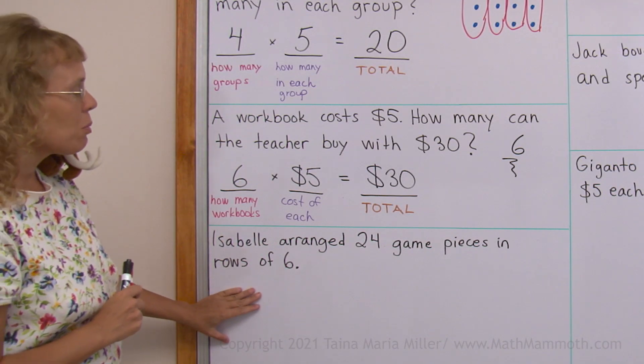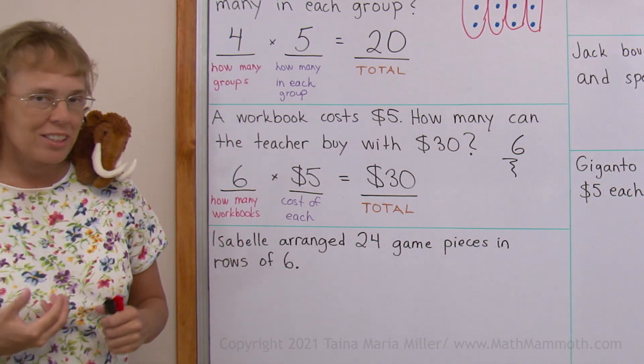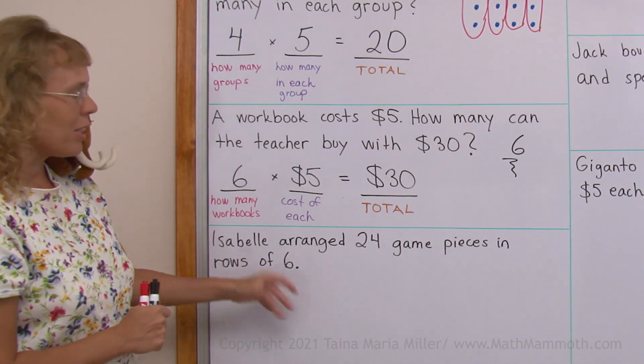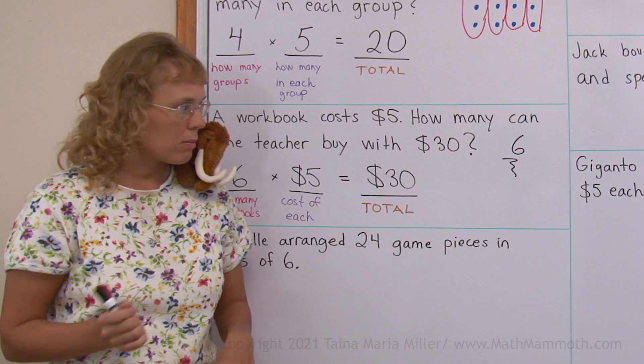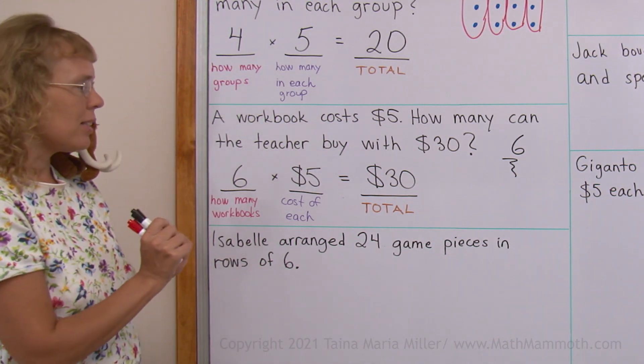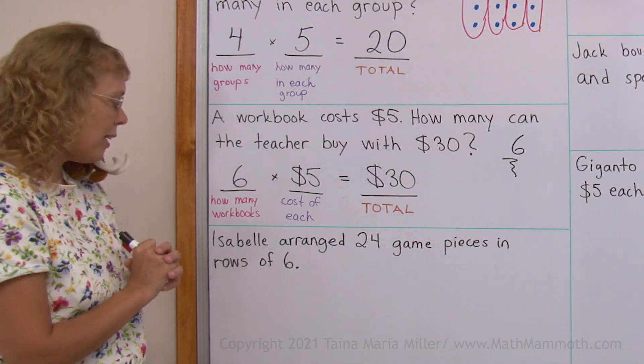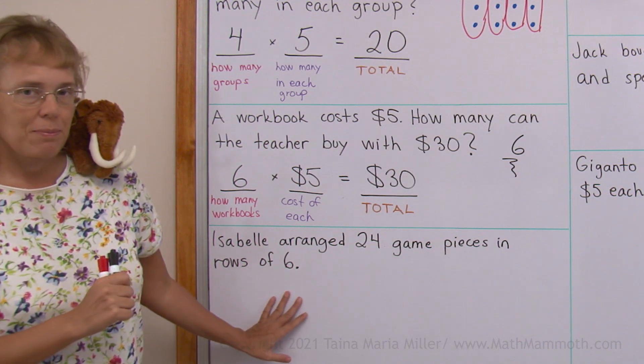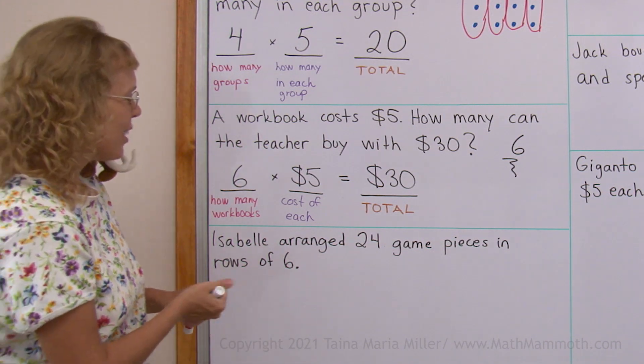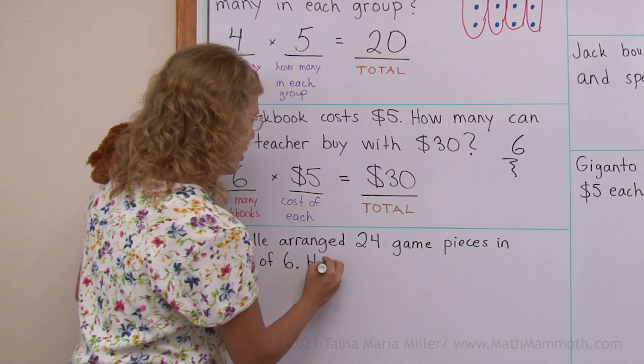Isabel arranged 24 game pieces in rows of six. It doesn't have a question. So what could we ask? 24 game pieces, that's the total. In rows of six. And how many rows? Yeah, that's what we can ask. How many rows did she get?